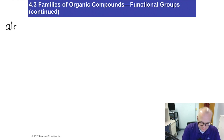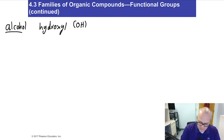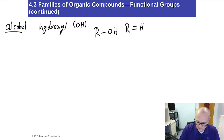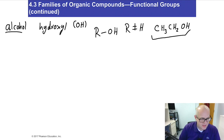Alcohol is another family. Alcohols contain hydroxyl — remember, hydroxyl is OH. So the structure is R-OH, where R cannot be hydrogen. For example, CH3-CH2-OH is ethanol — that's the ingredient in beer and wine. Those are alcohols.